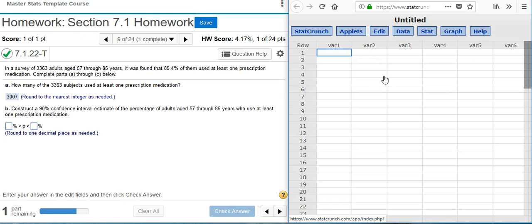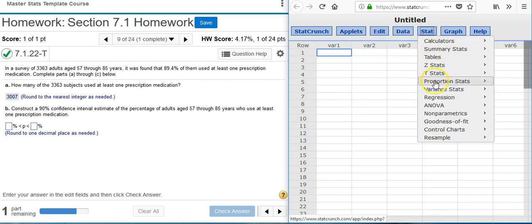To construct a confidence interval estimate, we don't need actual data. We have summary stats here in our problem statement. So I'm going to go up to Stat, Proportion Stats, because I'm constructing a confidence interval on proportions, One Sample because I'm only given one sample.